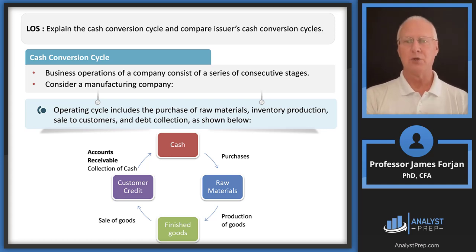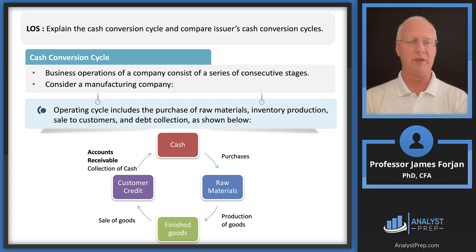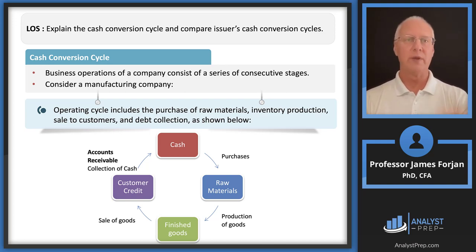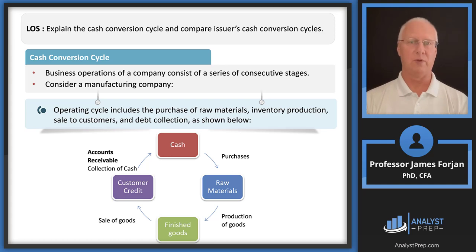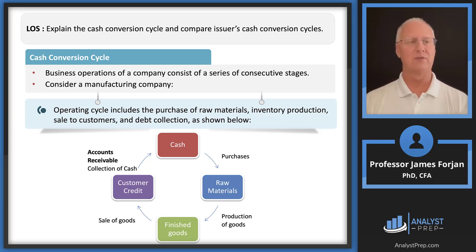Then we start selling to Walmart, Target, and food stores throughout the country. We could say you have to pay cash, but that's not how the business world works. So we say: here's a million dollars worth of Count Chocula — pay me next week, or in two weeks, or next month. We extend credit to facilitate the transaction, which means we're incurring an accounts receivable. Then we need to worry about collecting that cash. Just think of Count Chocula and you'll be able to answer the exam question.